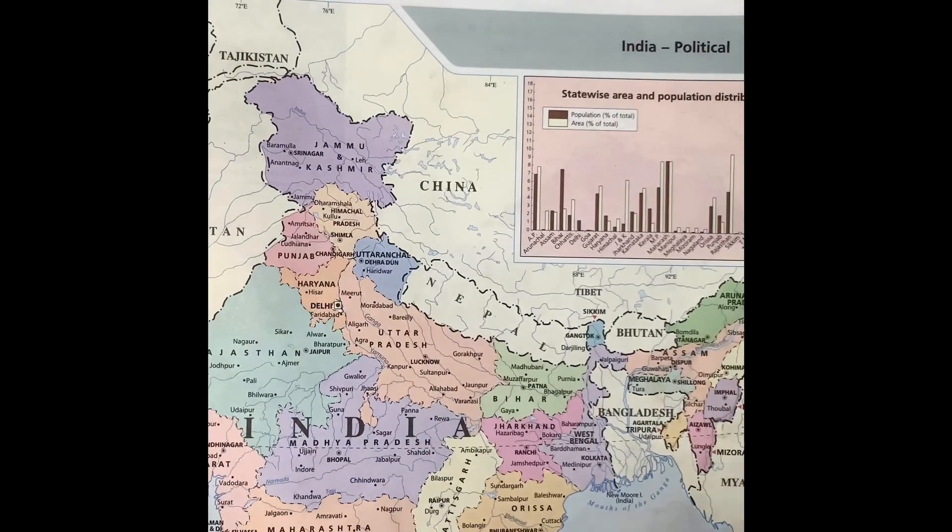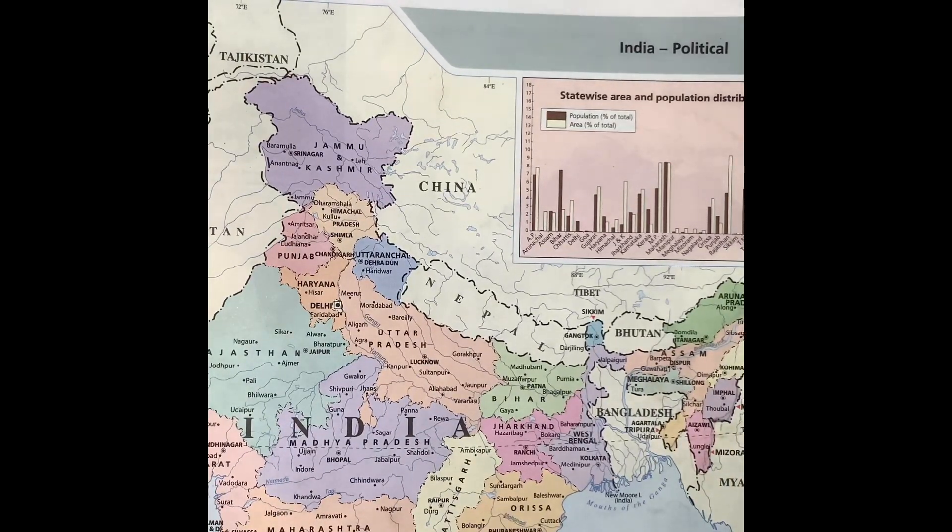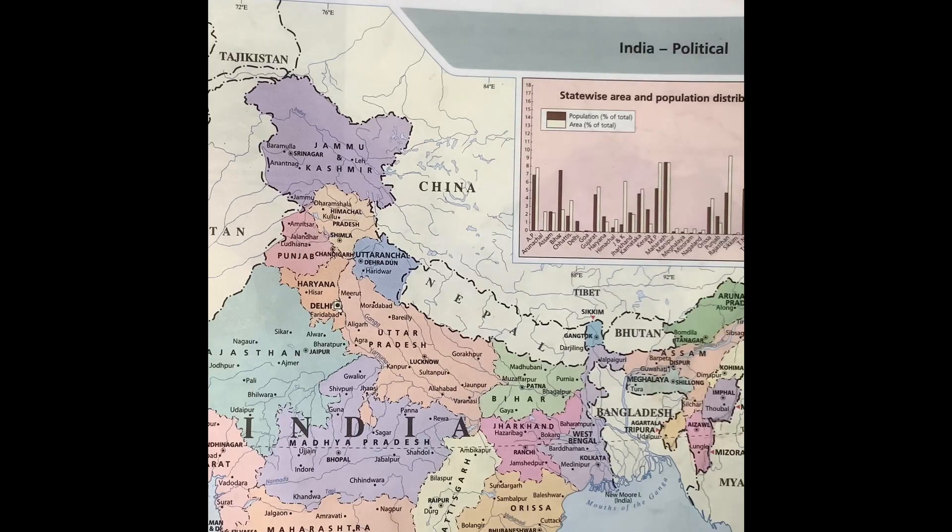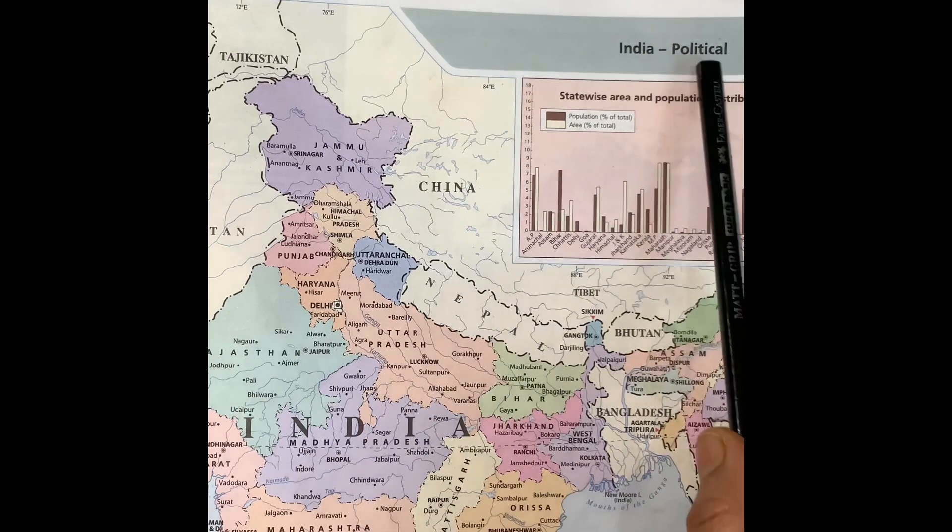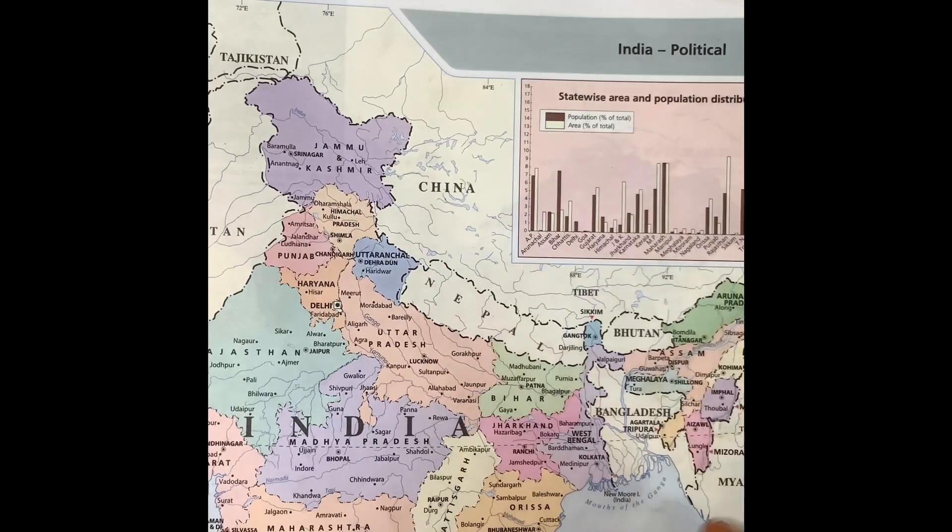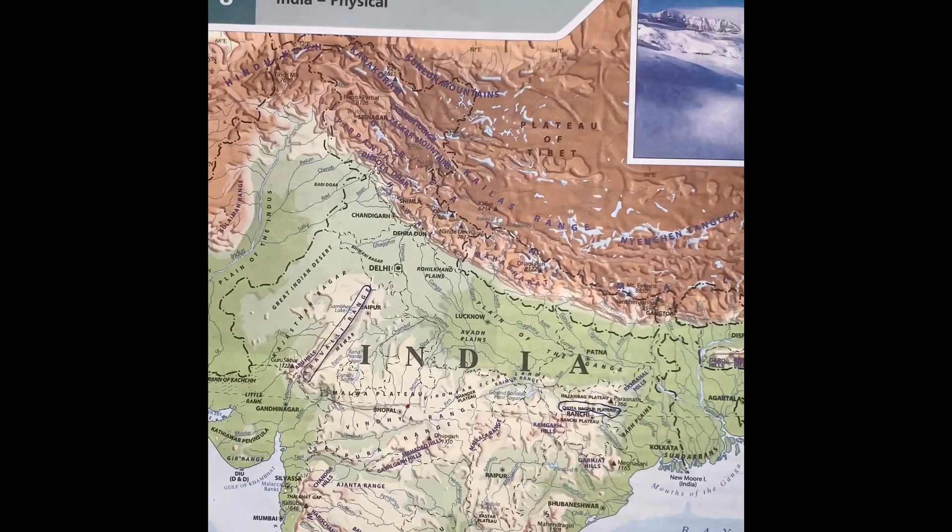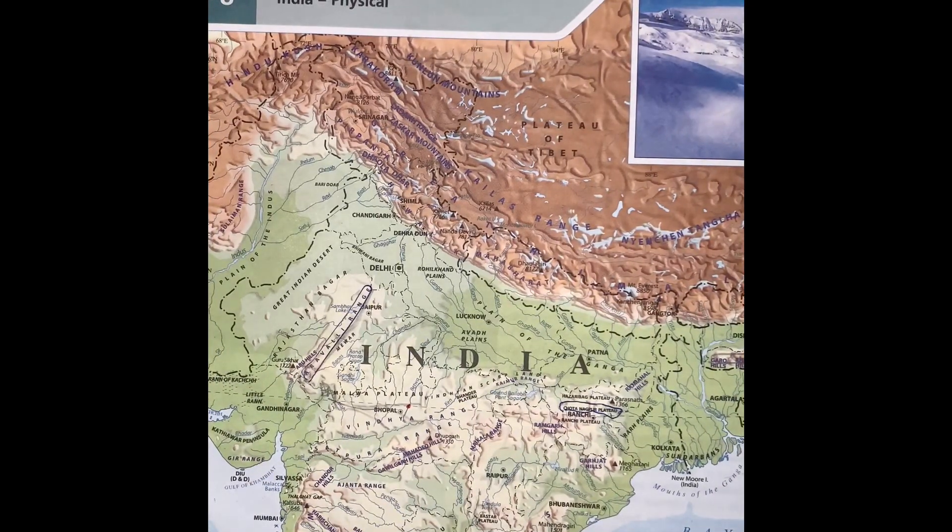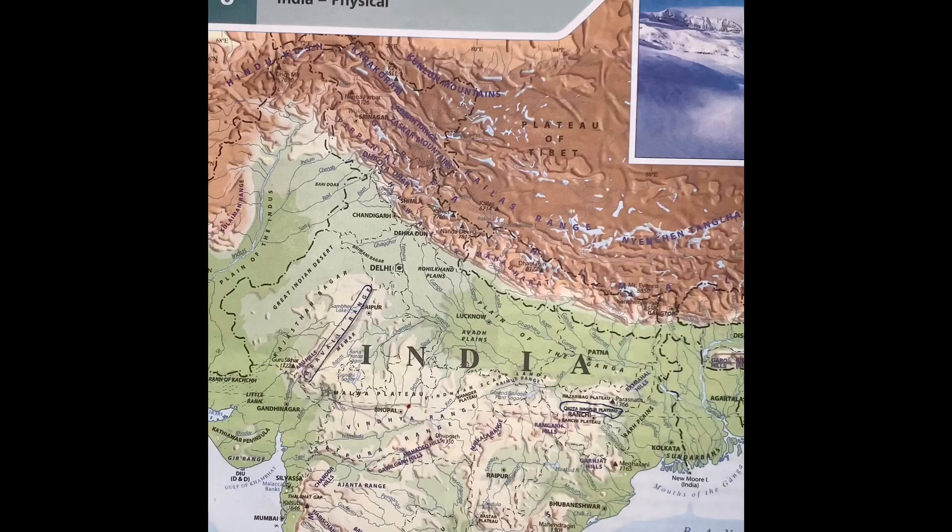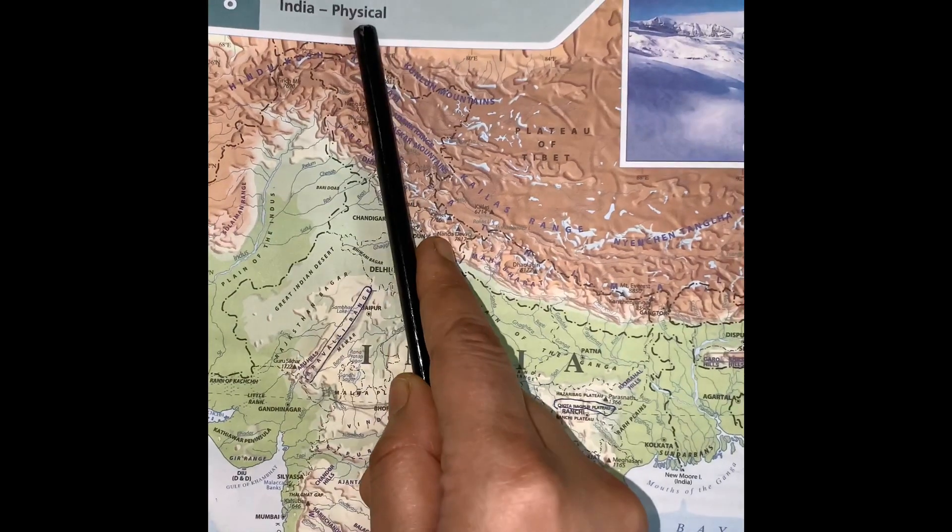If we want to see the boundaries of countries and states, locations of capitals, cities and towns, then we refer to political maps. If we want to see relief features such as mountains, plains, plateaus, rivers, etc., then we refer to the physical map.